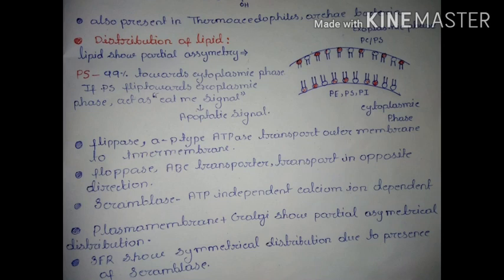The most important phospholipid is phosphatidylserine, which is actively held facing the cytoplasmic side of the cell — 90% of phosphatidylserine faces the cytoplasmic leaflet. If phosphatidylserine flips toward the exoplasmic phase, it acts as an 'eat me' signal, which is also called the apoptotic signal.